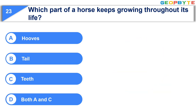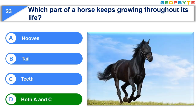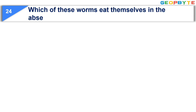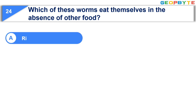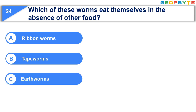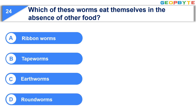Your time is up and the correct answer is Option D: Both A and C. The next question is: Which of these eats itself in the absence of other food? Option A: Ribbon worms. Option B: Tapeworms. Option C: Earthworms. Option D: Root worms. Your time starts now.